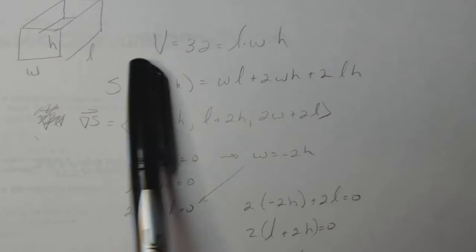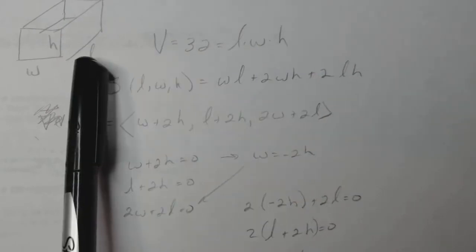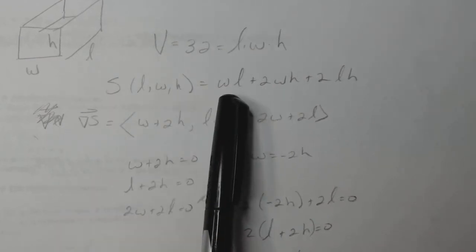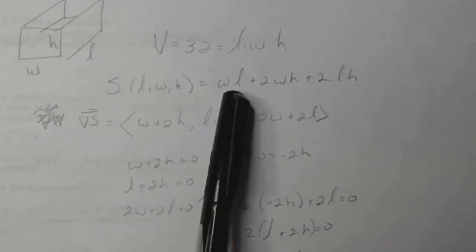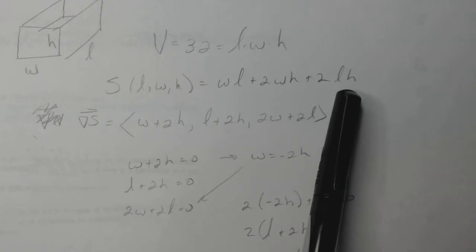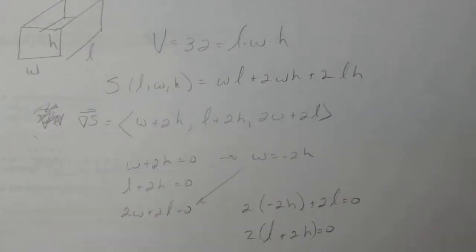So I wrote down the volume is 32 cubic units of length, width, height. There's my open top box. So I created my surface area. There's one space on the bottom that's width and length, two sides that are height and length, and two sides front and back that are width and height. So that's my surface area.